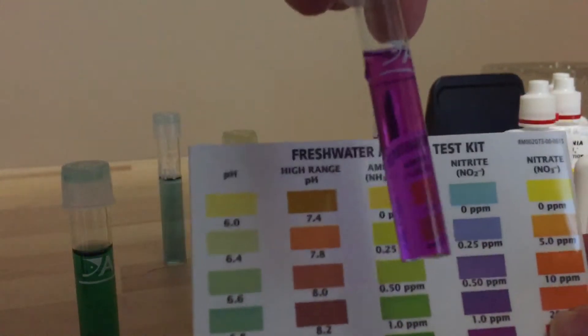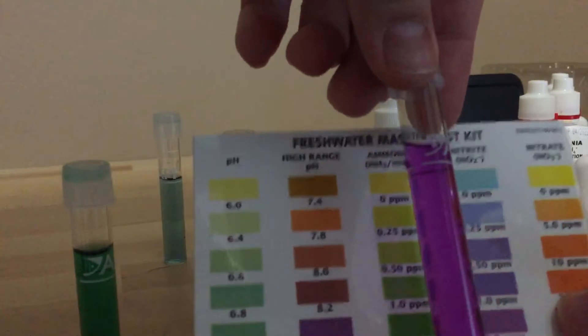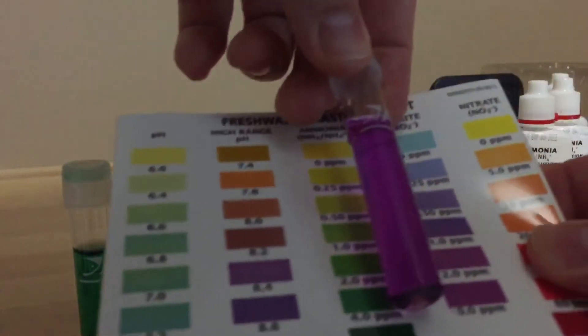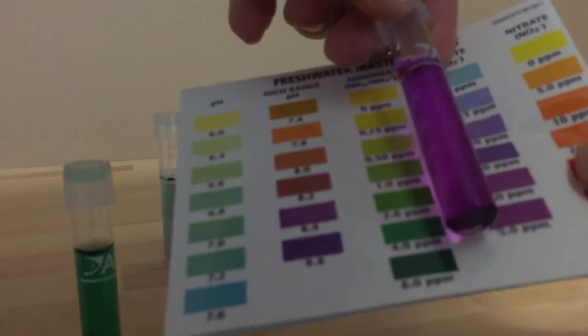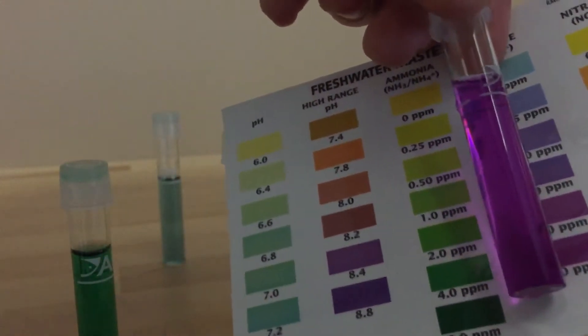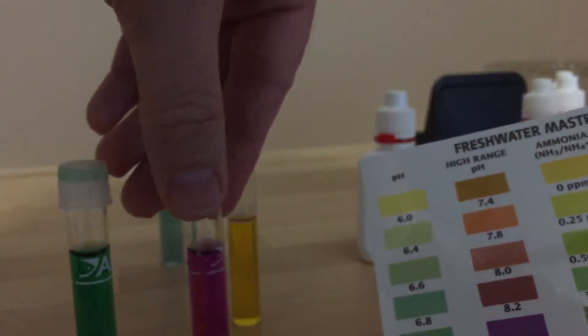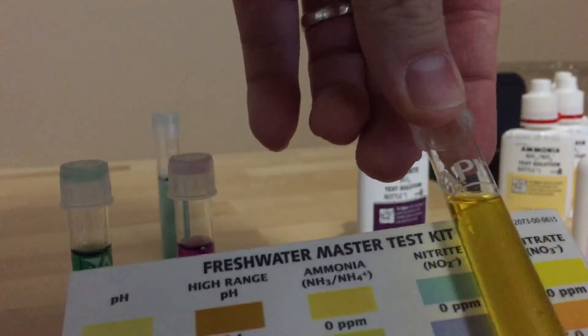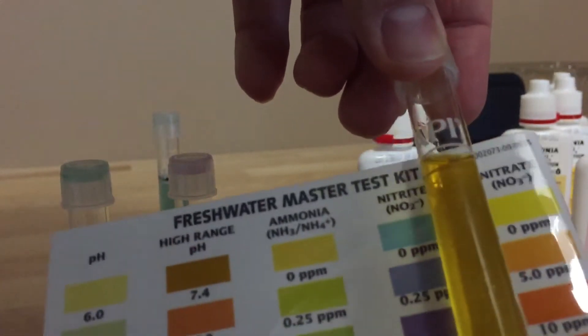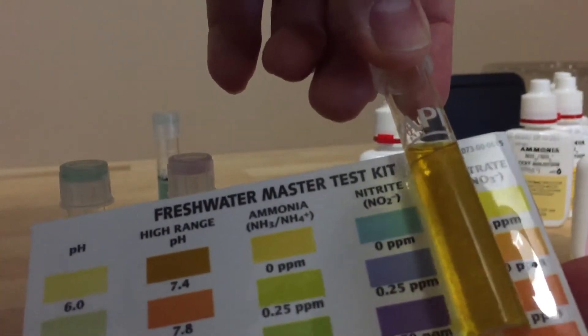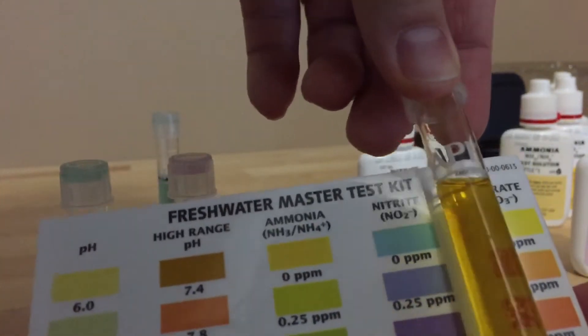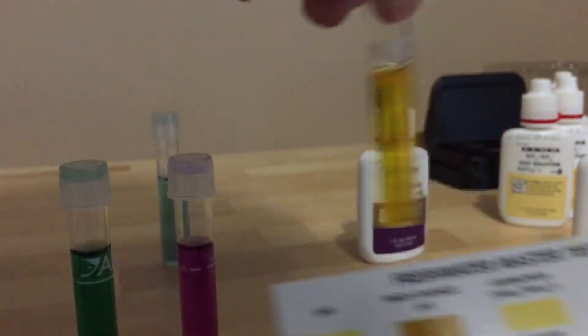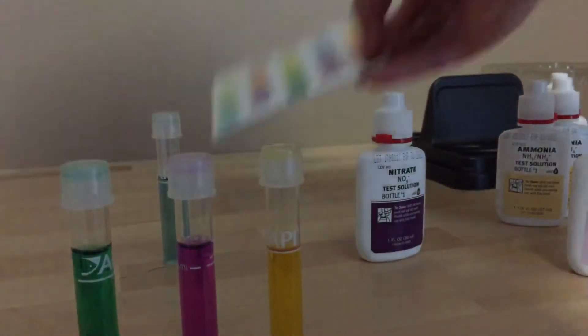Now this is what I want to see: I want to see nitrites so I know that my cycling process is happening. And looking at that again on the scale, you see that's probably around two, two ppm, which is good. And then what we really want to see here is that's just off yellow which means the nitrates are just starting to form.